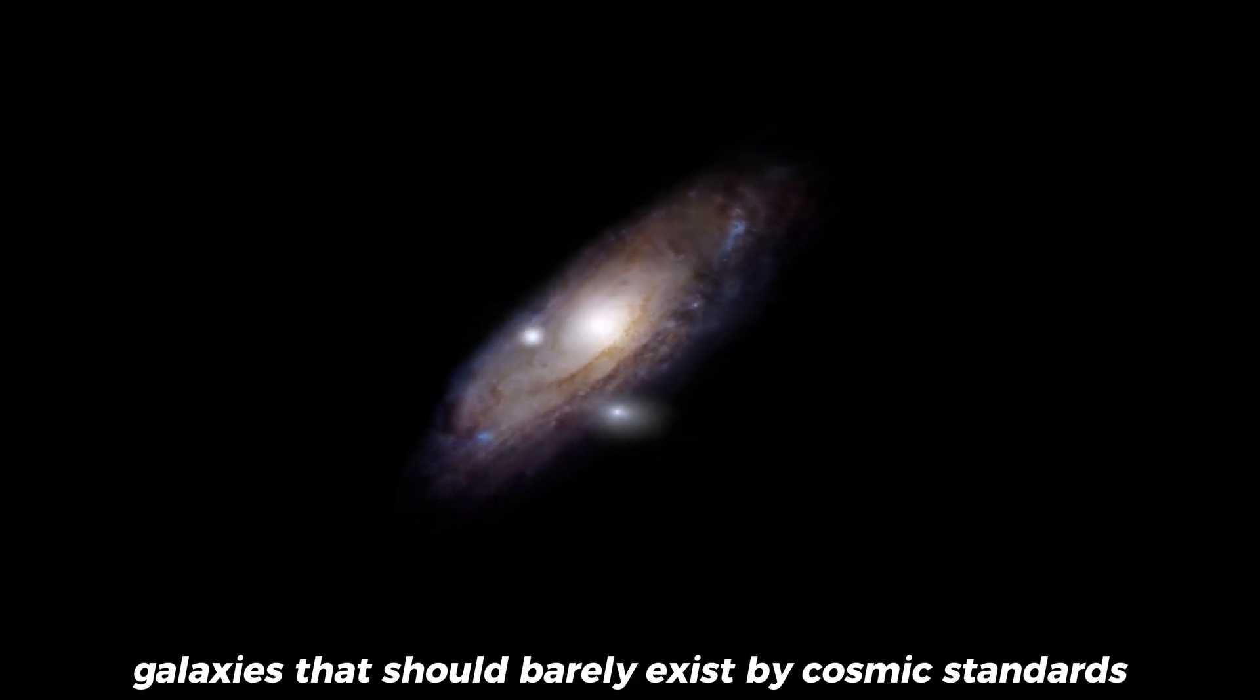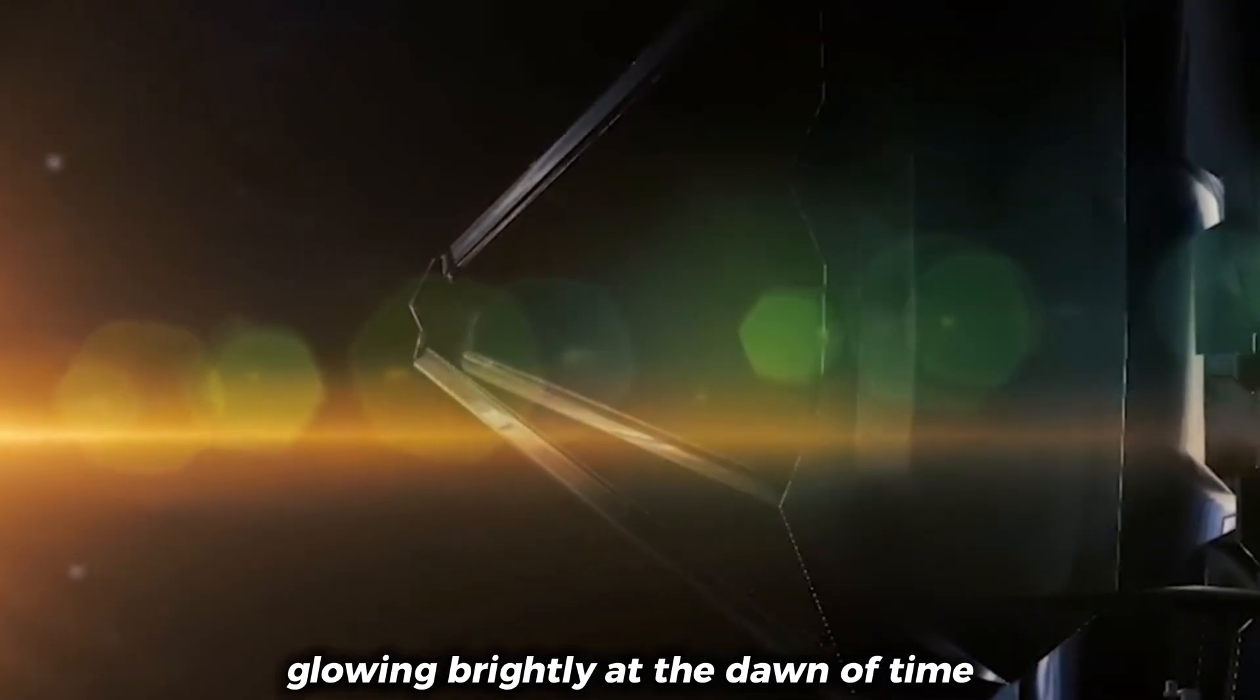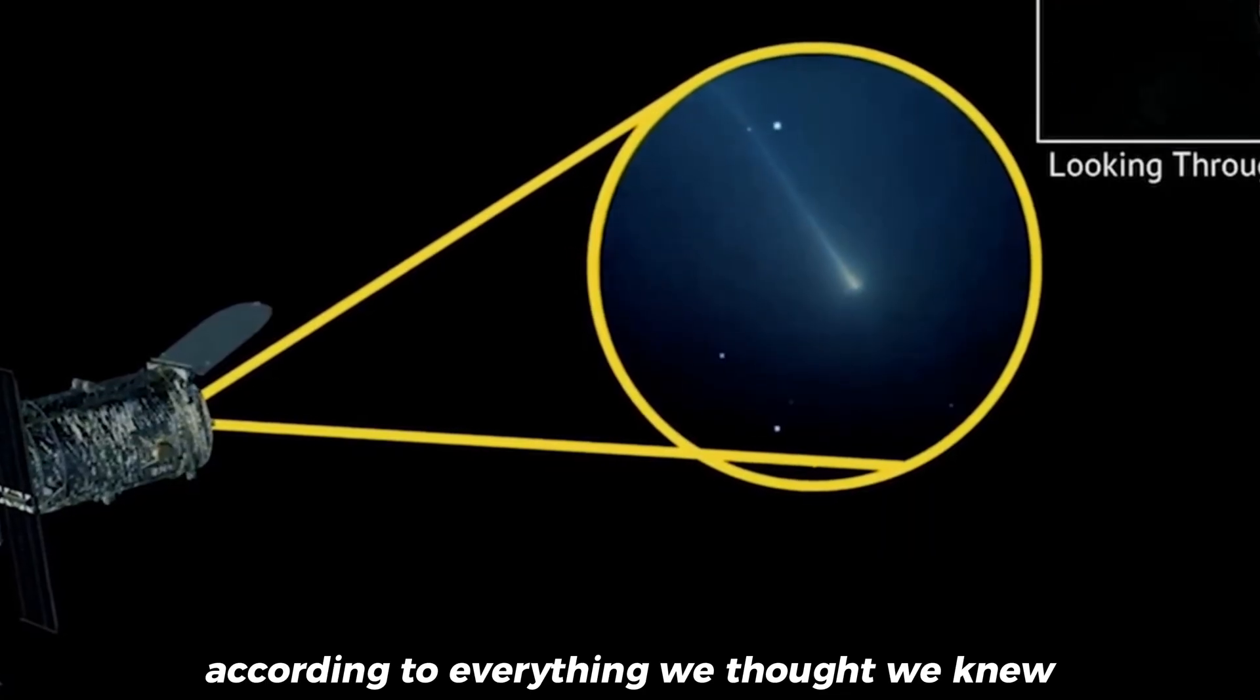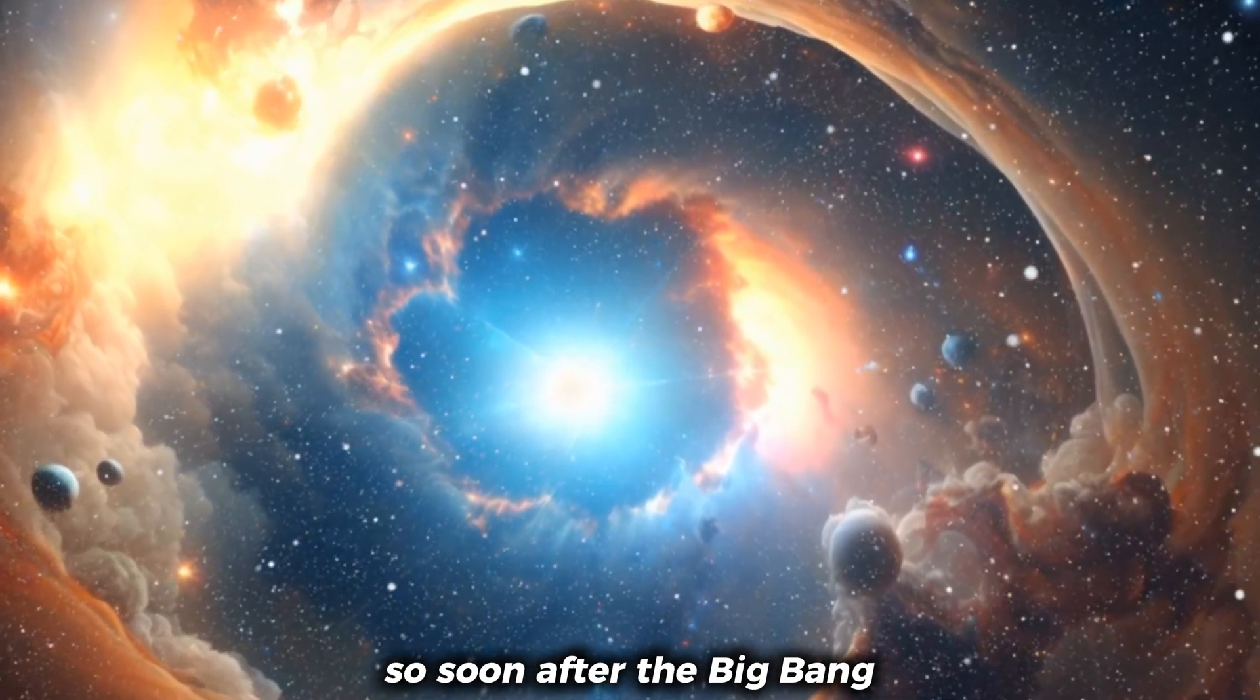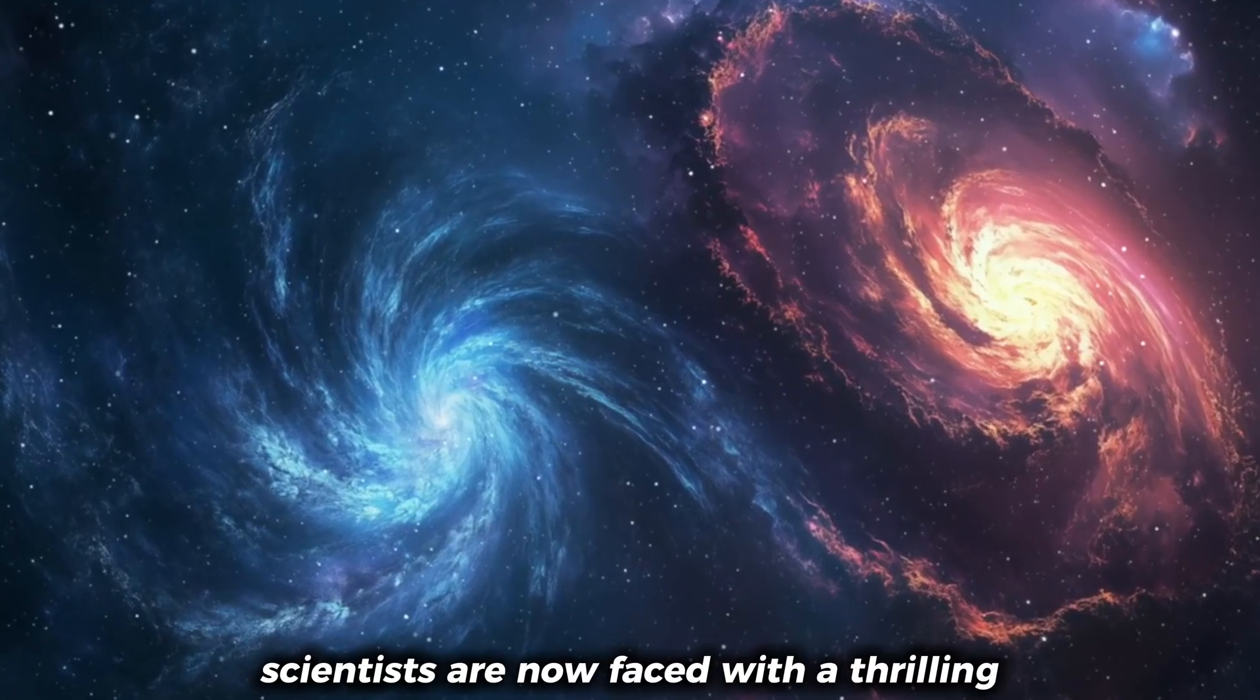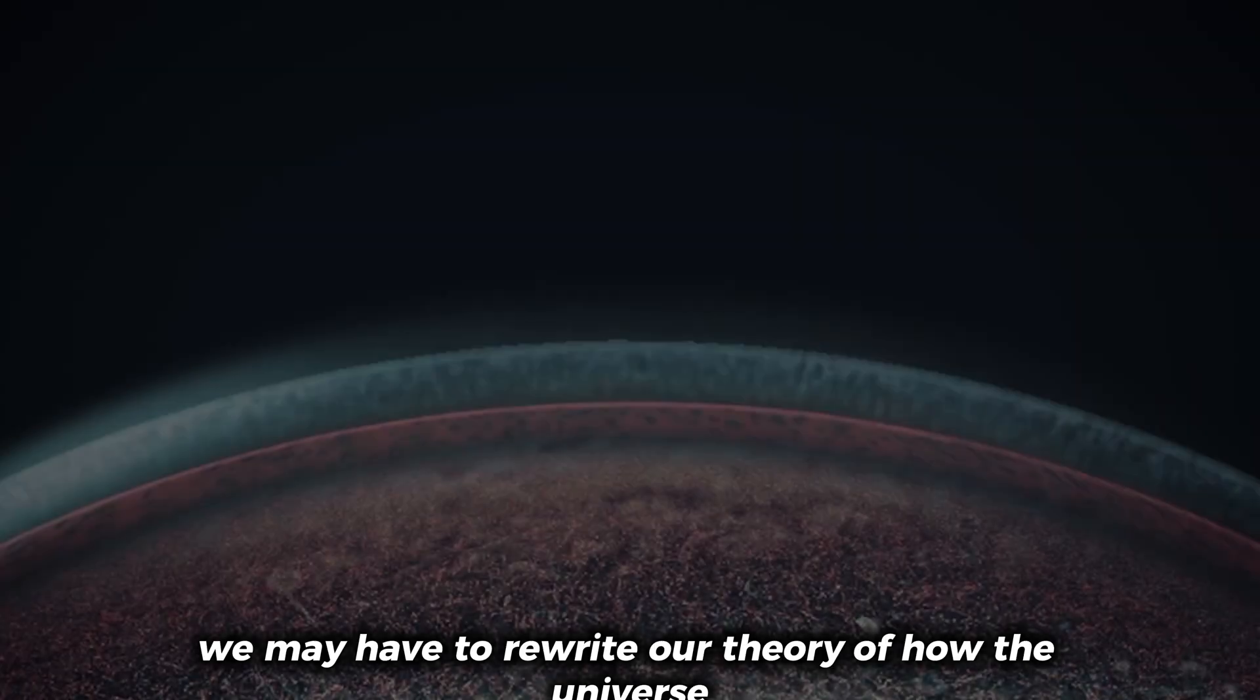Think about that. Galaxies that should barely exist by cosmic standards are already fully-grown giants glowing brightly at the dawn of time. It's as if the universe hit the fast-forward button. According to everything we thought we knew, this shouldn't be possible. Such mature galaxies weren't supposed to exist so soon after the Big Bang. Something, somewhere, doesn't add up. Scientists are now faced with a thrilling yet unsettling reality. We may have to rewrite our theory of how the universe began.